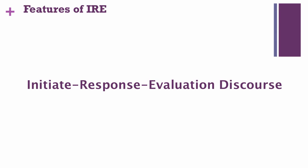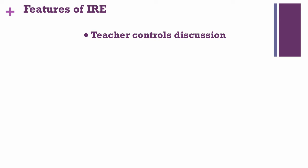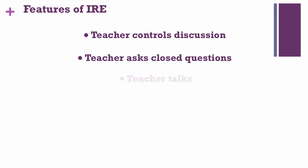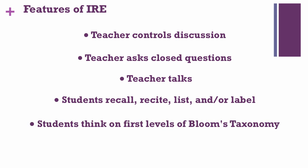Let's process what you just heard. With initiation response evaluation discourse, you hear the following elements: the teacher controls discussion with closed questions; the teacher does more of the talking; the students engage in recalling, reciting, listing, and/or labeling. Students think on the first levels of Bloom's taxonomy — the knowledge and comprehension levels. And finally, the teacher may privilege or reward the student with the right answer versus the student with the wrong answer.